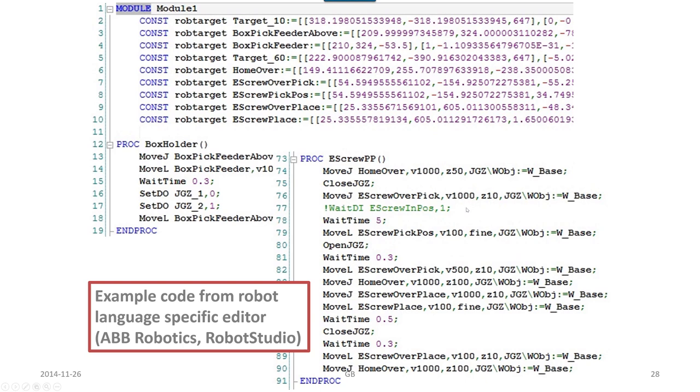If you look at ABB robotics robots, we have a language called rapid and these are some extracts of how the code can look. We have some robot targets, which are poses with a naming and some data related to those XYZ and quaternion for the position and for the orientation of the tool. And then we have some procedures with some instructions.